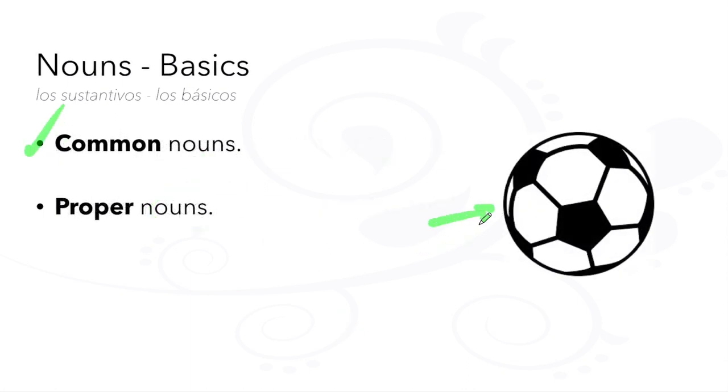There are common nouns like ball, book, or desk, and there are proper nouns like Nike, Snickers, Jennifer, or David.